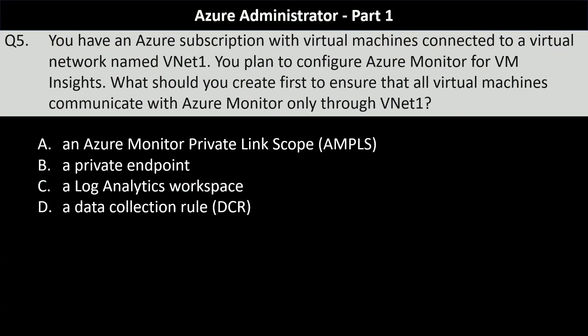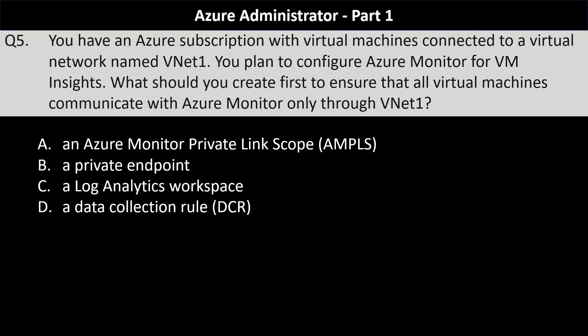Fifth question. You have an Azure subscription with virtual machines connected to a virtual network named VNet1. You plan to configure Azure Monitor for VM Insights. What should you create first to ensure that all virtual machines communicate with Azure Monitor only through VNet1? Your options are an Azure Monitor Private Link Scope, a private endpoint, a log analytics workspace, or a data collection rule.